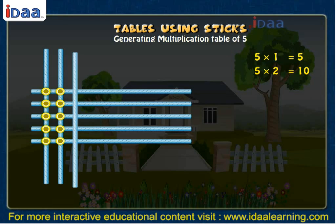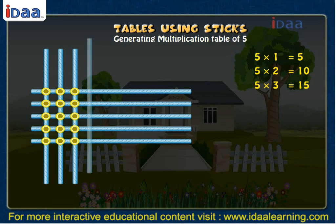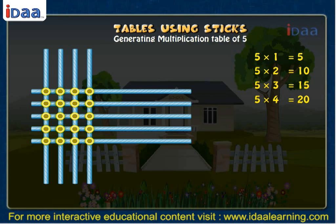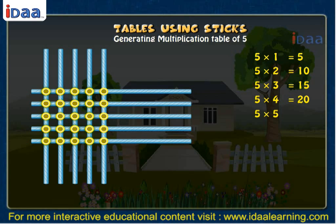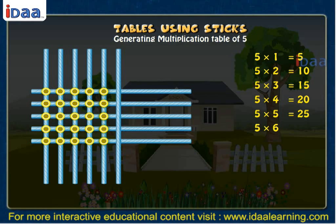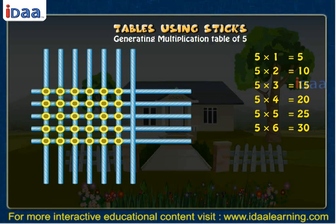If we put 3 sticks vertically, we shall get 15 points of intersection. If we put 4 sticks vertically, we shall get 20 points of intersection. If we put 5 sticks vertically, we shall get 25 points of intersection. If we put 6 sticks vertically, we shall get 30 points of intersection. If we put 7 sticks vertically, we shall get 35 points of intersection.